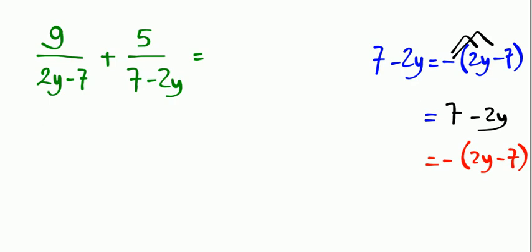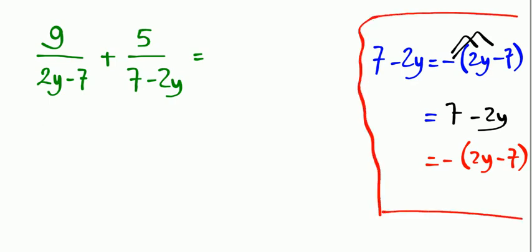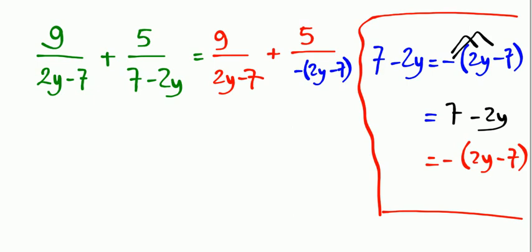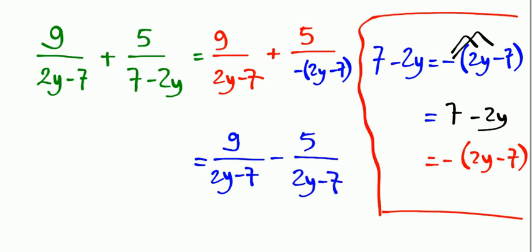So here is the different part: 7 minus 2y can be written as negative 2y minus 7. So I'm going to write instead: 9 over 2y minus 7, plus 5 over negative 2y minus 7. And since a positive number divided by a negative number is negative, this becomes negative 5 over 2y minus 7.